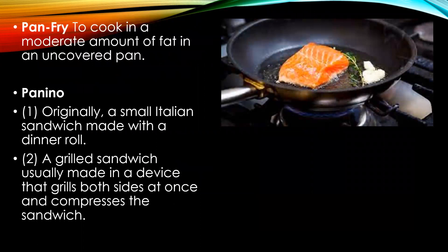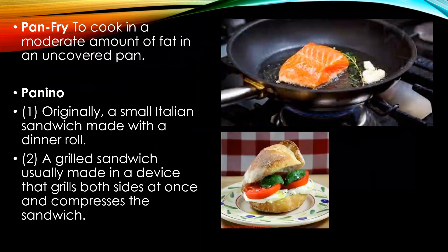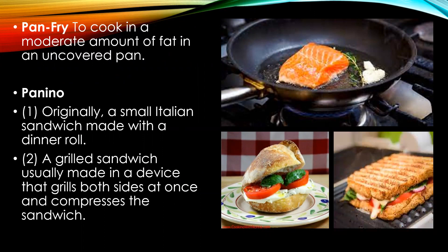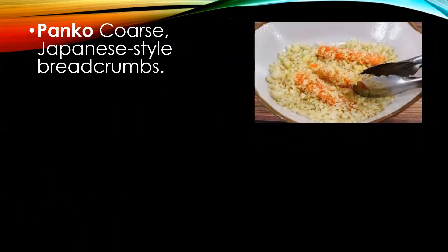Panini, originally a small Italian sandwich made with a dinner roll, or a grilled sandwich usually made in a device that grills both sides at once and compresses the sandwich. The next one is panko, coarse Japanese-style breadcrumbs used to bread meat, fish, and poultry pieces before frying.